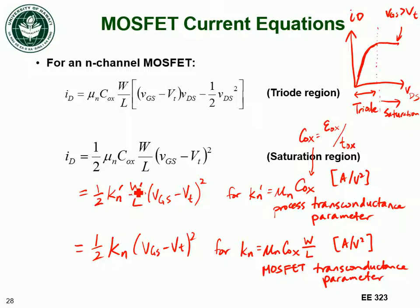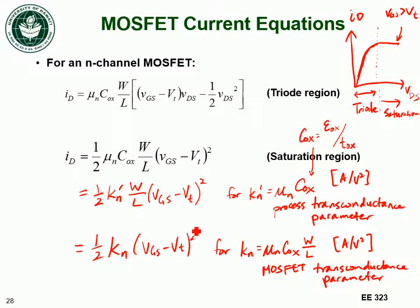The process transconductance parameter is usually something you don't have control over as a circuit designer. You may have control over the gate width and the gate length, so if you can change those parameters, you can change what your drain current will be, assuming threshold voltage and VGS stay the same. But if you don't have control over those either, you might as well represent everything as the MOSFET transconductance parameter, meaning the only thing you can change to affect drain current is VGS.